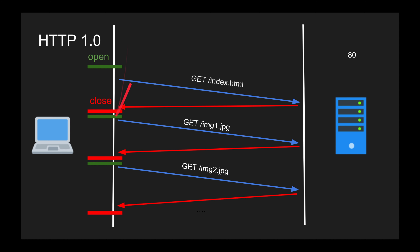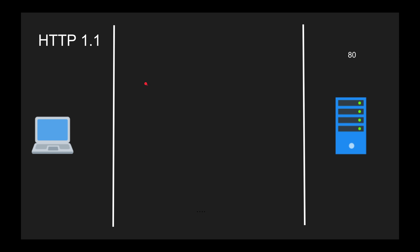That was very bad and we quickly fixed it in HTTP 1.1. The reason: TCP open and close is very expensive because of the three-way handshake. We were worrying about the memory occupied by the TCP connection so we didn't want to leave it open, but we forgot about performance and took a performance hit. We fixed that problem with HTTP 1.1.